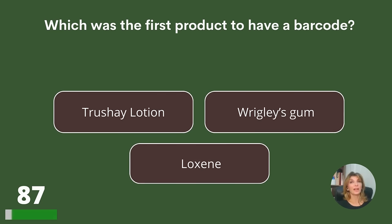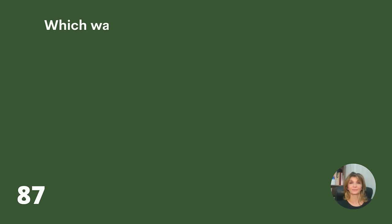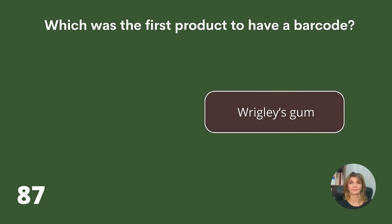Which was the first product to have a barcode? Trache lotion, Wrigley's gum, or Luxene? Answer: Wrigley's gum.